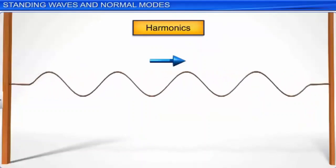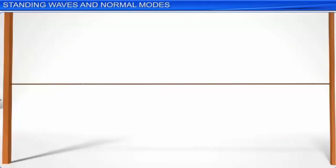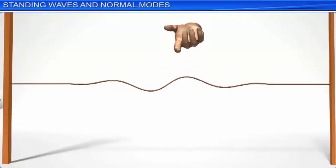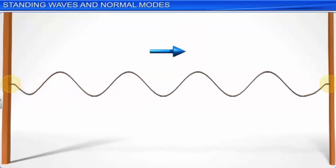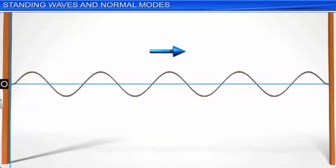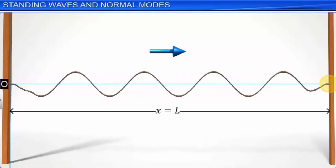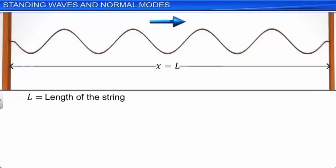We will now discuss harmonics. Let us consider a stretched string fixed at both ends and plucked to generate a wave. Nodes are produced at both the fixed ends. If the left end of the string is taken as the origin, then for the right end x = L, where L is the length of the string. For the right end to be a node, the length L = N(λ/2), for N = 1, 2, 3, and so on.